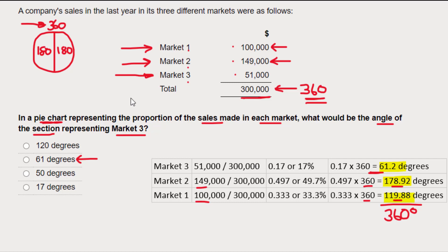So I'm very happy and confident that the second option is the correct answer. Not only did I get it right with my first calculation for market three, I then proved it with a double-check using the other two markets to come back to a total of 360 degrees.